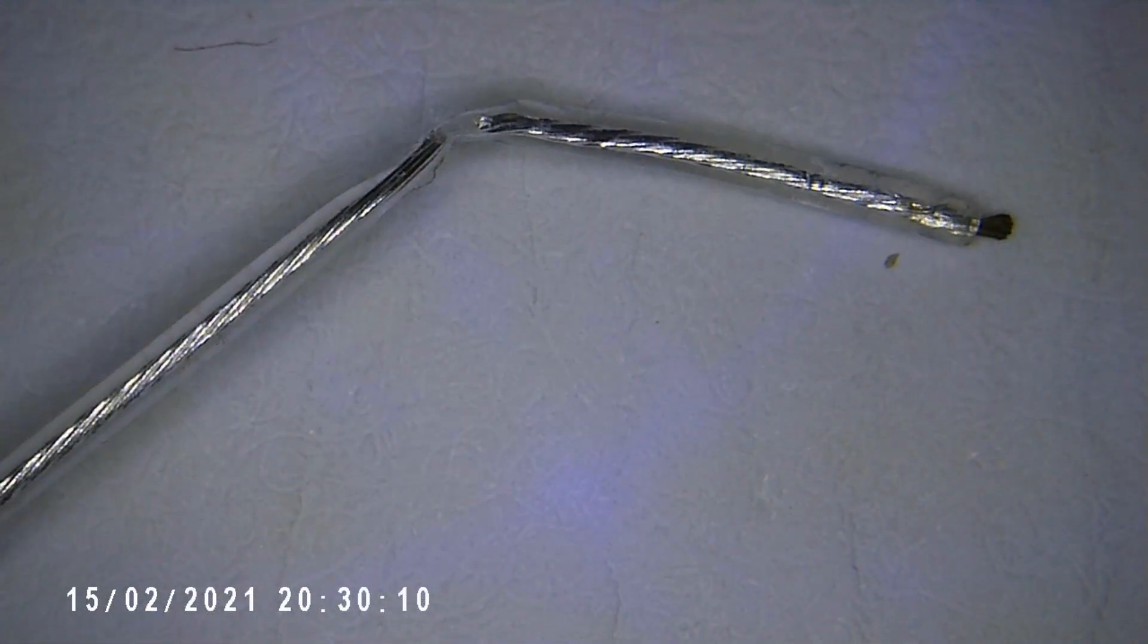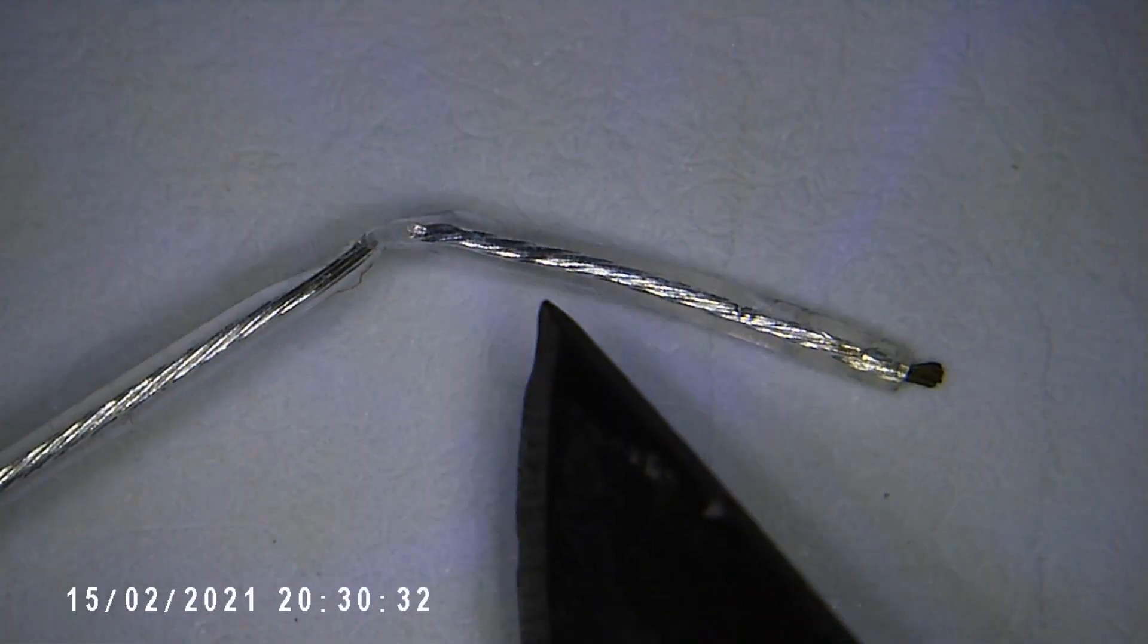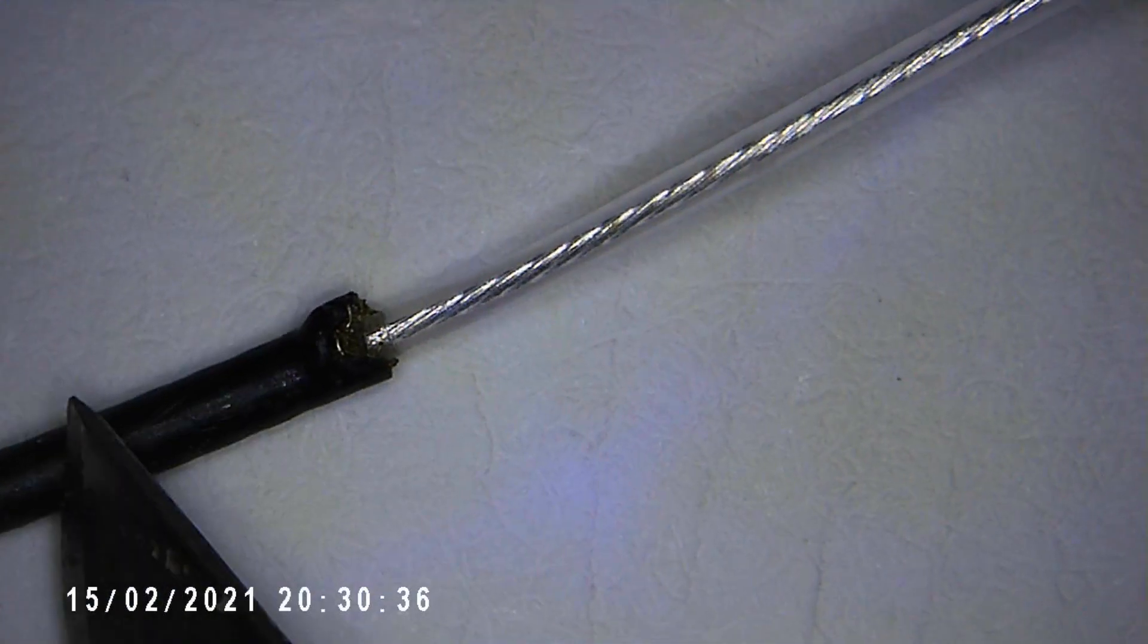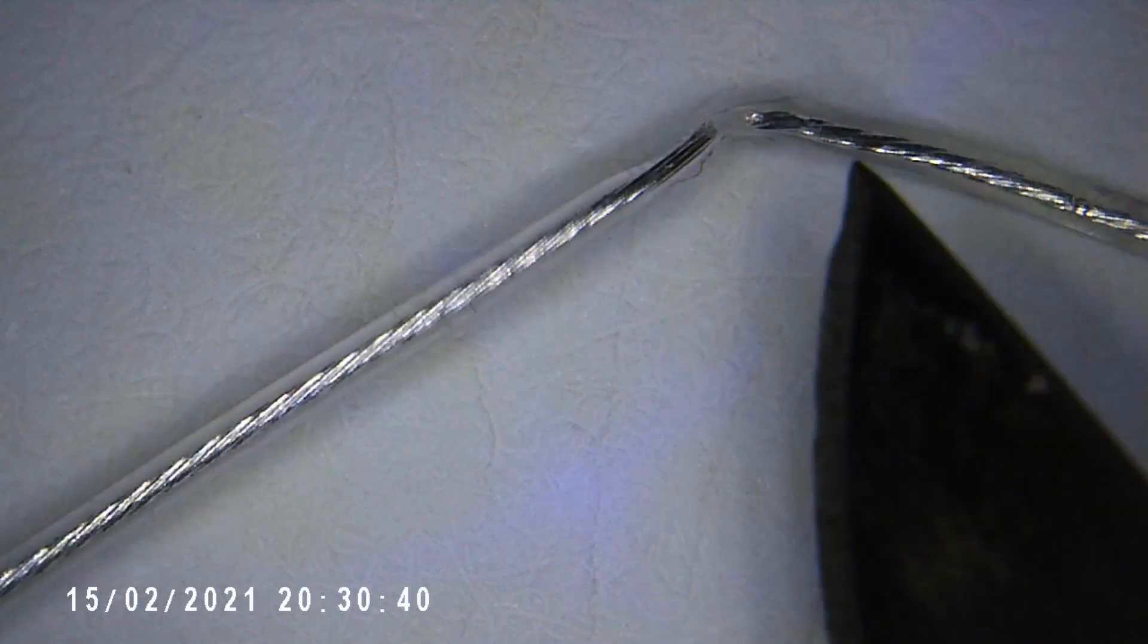Under the microscope then you can more clearly see the break in the antenna at the end there. What we'll need to do is cut back the outer sleeving to the same amount to restore the antenna to its proper length.